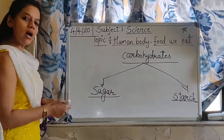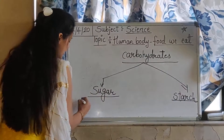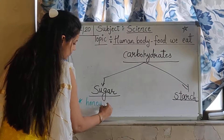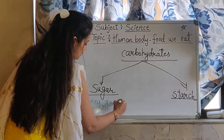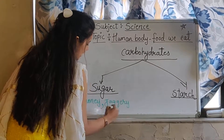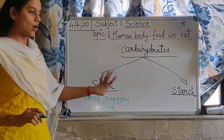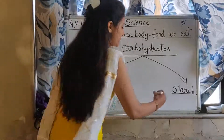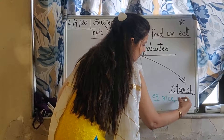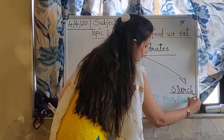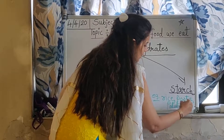So we will write the examples. Sugar — the taste is sweet. Examples include honey, jaggery, mango, apple, etc. If you eat these, you will get sugar carbohydrates. For starch, the examples are rice, pasta, potato, etc.